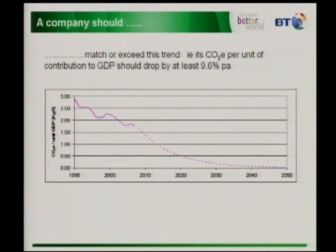This is the same graph. What a company needs to do is to match or exceed that trend — to reduce its carbon emissions by at least the same or more than that gross domestic product intensity measure from the previous page. Using this measure of value added, which is the economic contribution of a company to gross domestic product, what a company needs to do is reduce its carbon emissions per unit of value add by the same or more than the carbon emissions per unit of GDP — for the company to know it is contributing to the climate stabilization targets required globally.